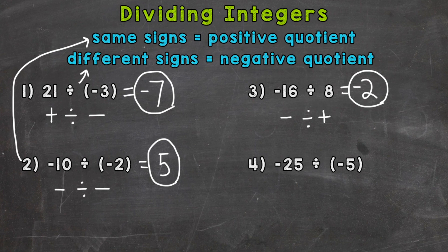And lastly, number 4, we have a negative divided by a negative. So negative 25 divided by negative 5. 25 divided by 5 is going to give us 5. Now let's determine if that's going to be a positive quotient or negative quotient. We have negative divided by negative, so same signs there equals a positive quotient. And we end up with a positive 5.